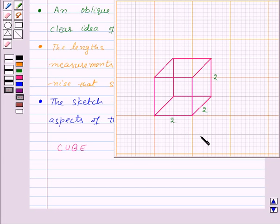Here, from this sketch, it is very clear that all the lengths are not equal to the exact measurements. So, to overcome this, we will learn to draw an isometric sketch.